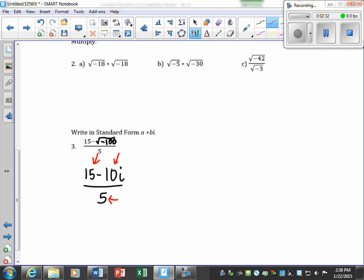So we want to divide a 5 out of each. So 15 divided by 5 is 3, 10 divided by 5 is 2, and 5 divided by 5 is 1. But we don't necessarily have to put 1 on the bottom, so it's going to simplify to 3 minus 2i.